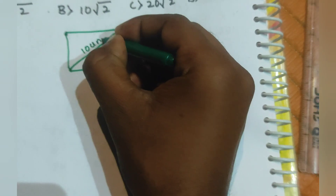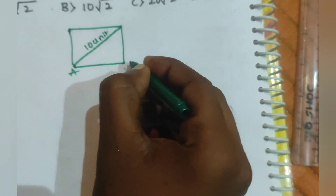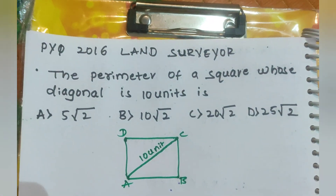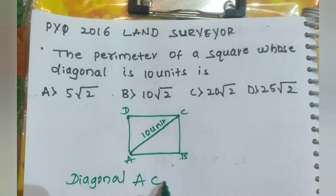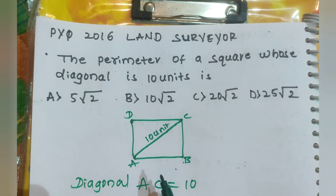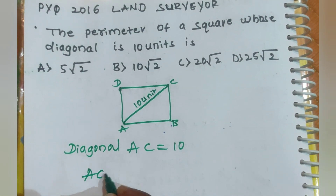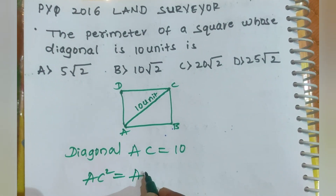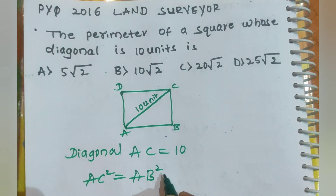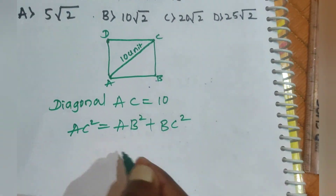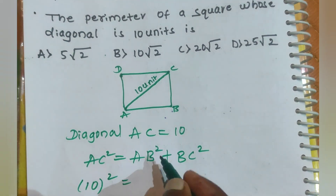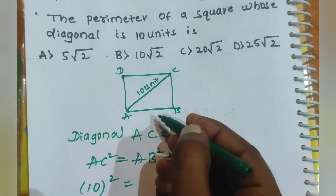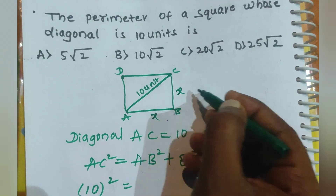Label the square A, B, C, and D. The given diagonal is 10 units. By Pythagoras theorem: AC² = AB² + BC². AC is given as 10 units. Let AB and BC each equal X.